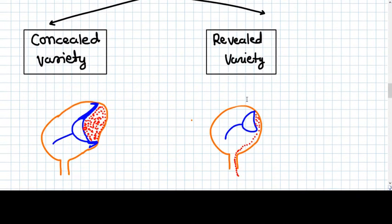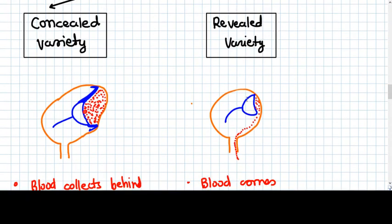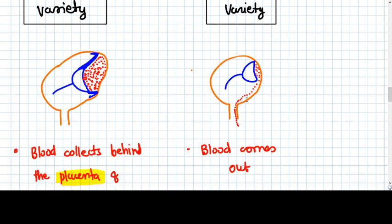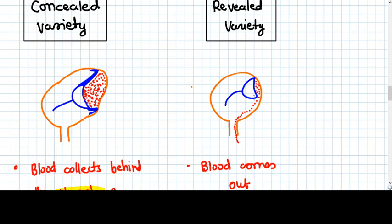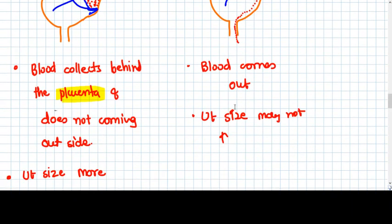Now the types of abruptio placenta is two types. Concealed variety and revealed variety. Concealed means blood, what concealed means? You need to hide something. The blood is hiding behind the placenta. It doesn't come out. And in the revealed variety, the blood is not hiding inside the placenta, backside of the placenta. It just comes out.